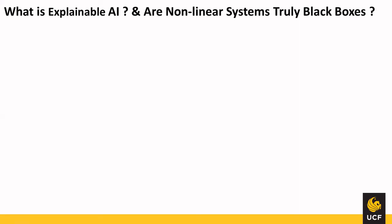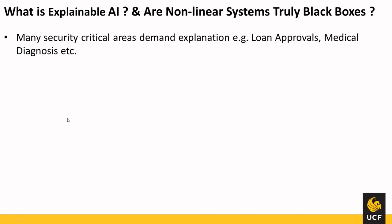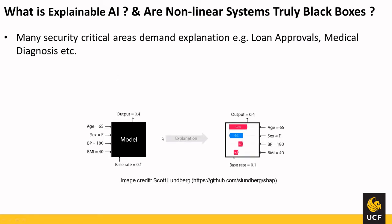So what is explainable AI, and are nonlinear systems truly black boxes? Machine learning systems are giving the best results across industry and matching human-level accuracy. But there are security-critical areas like loan approval, medical diagnosis, or autonomous vehicles where people need to know how and why decisions are being made. This loan approval model has features like age, sex, BP, and BMI, based on which the prediction is made, and people want to know which factor the decision is based on.